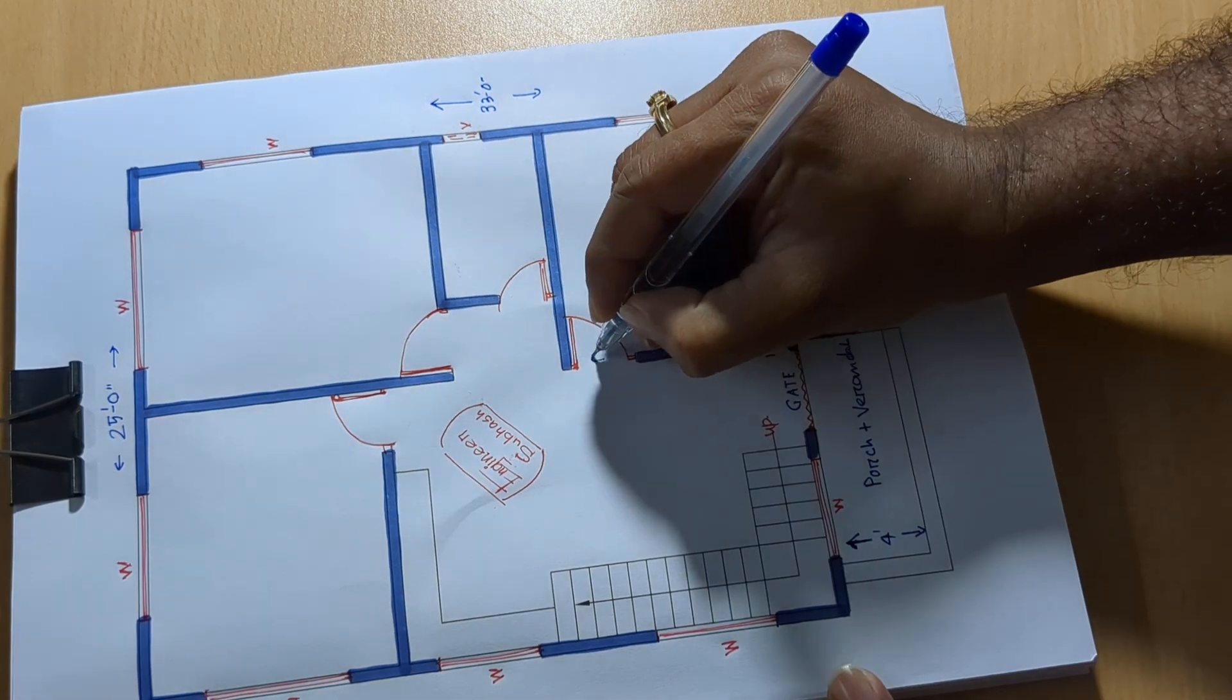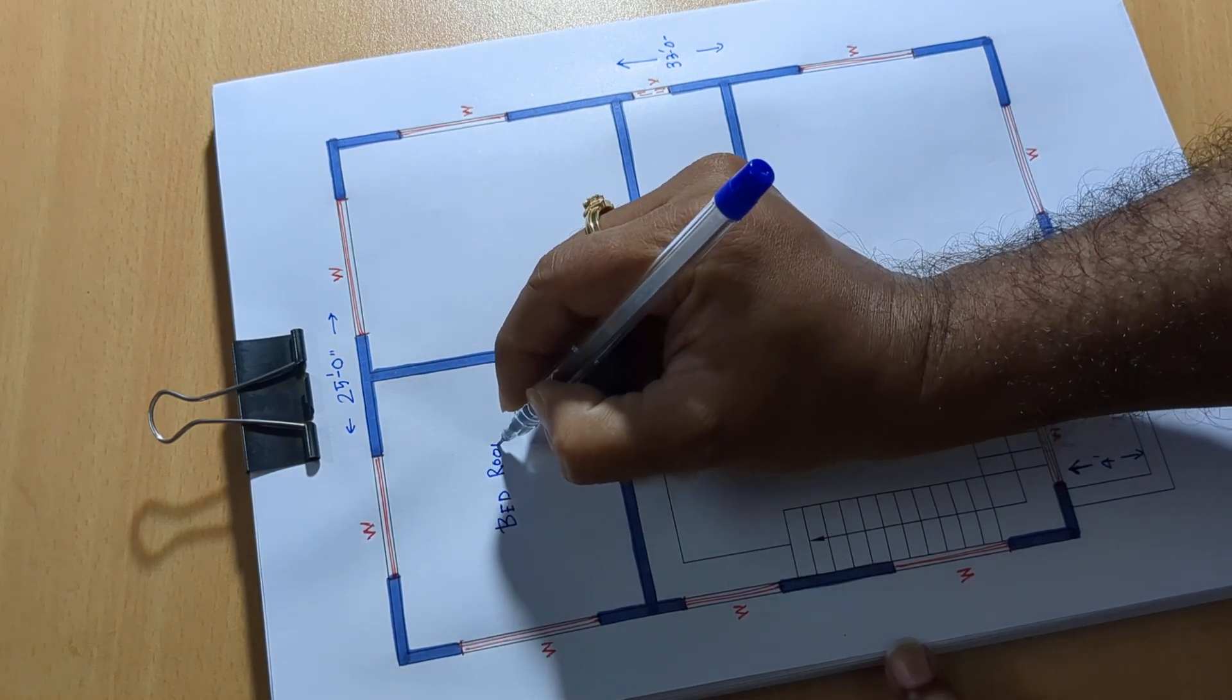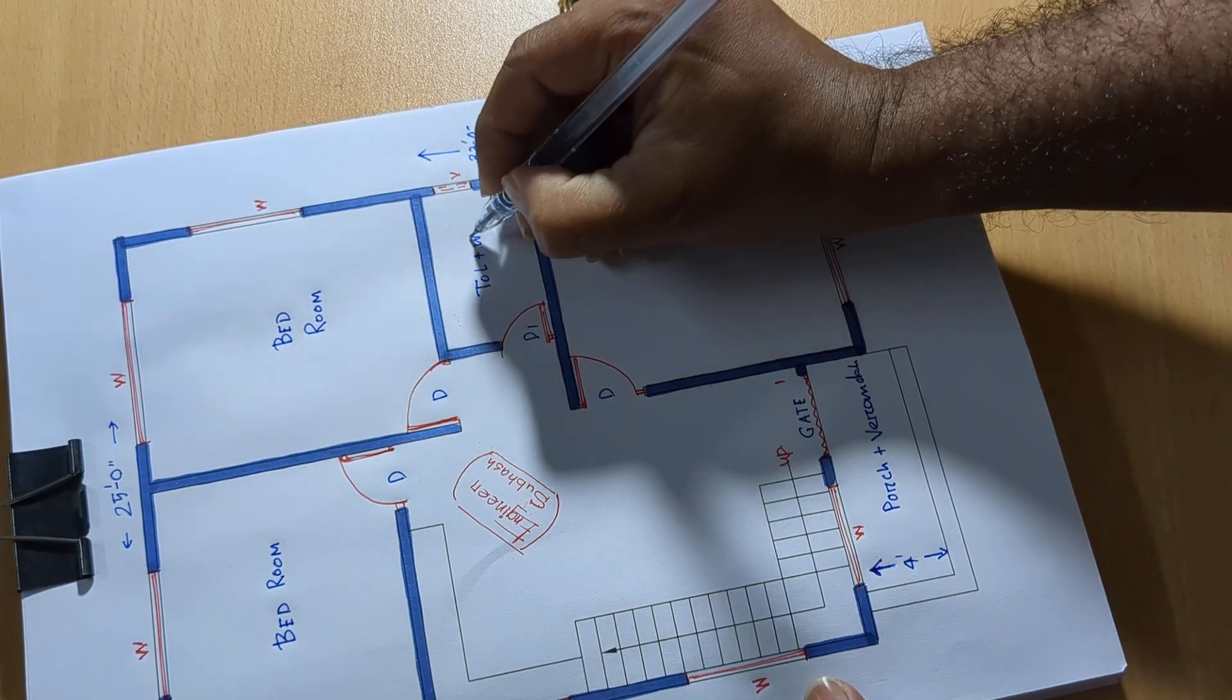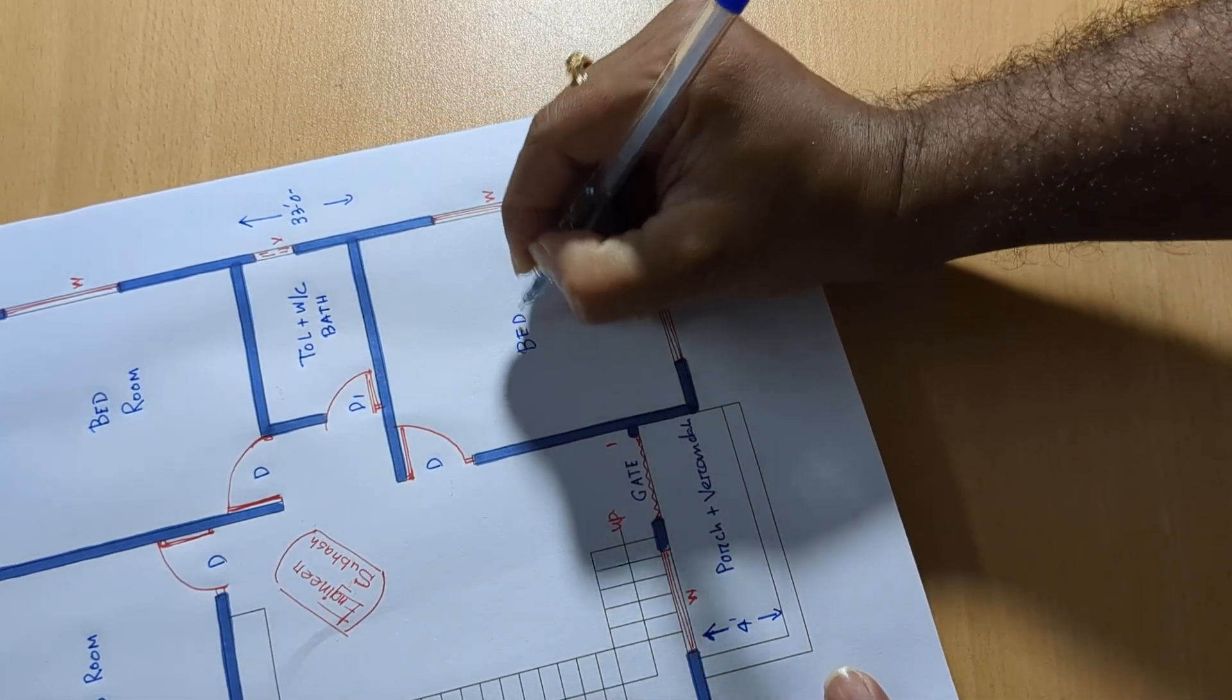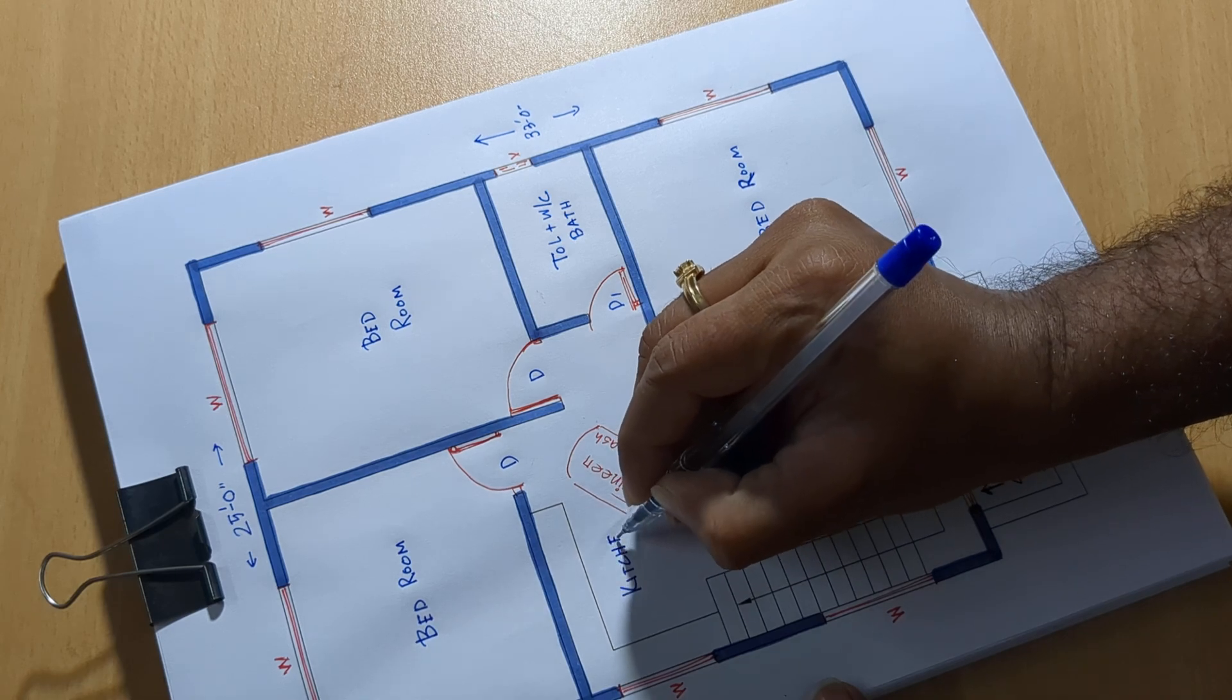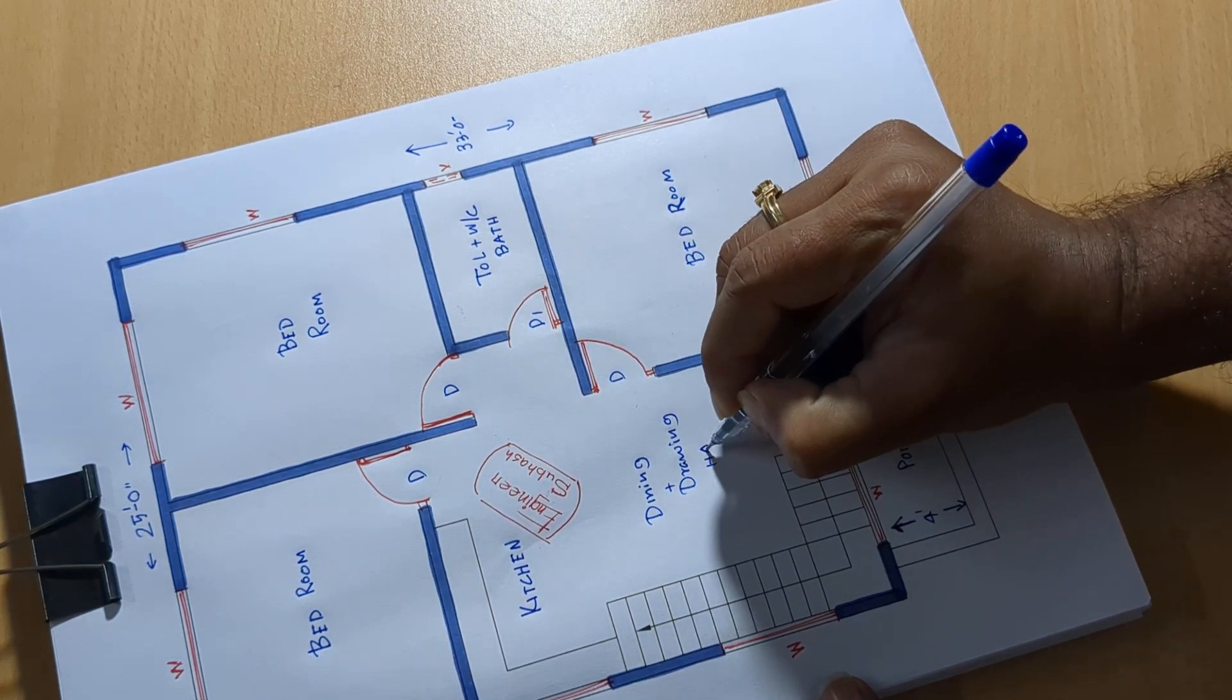4 feet door, door, door, D1. Bedroom, next, toilet plus WC and bath, bedroom, kitchen, dining plus drawing, hall.